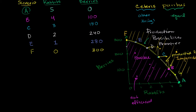A point over here — let's say this point right over here — you have not achieved productive efficiency, because you can get more rabbits without having to give up any berries and get to scenario B. Or you could get more berries without having to give up any rabbits and get to scenario D. So this point is inefficient.